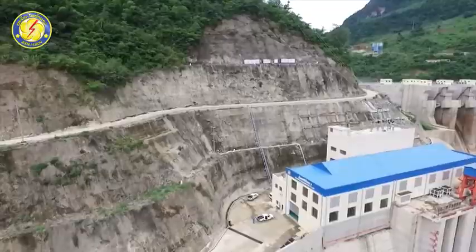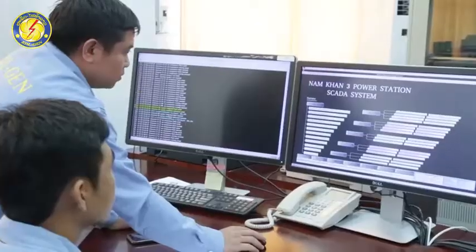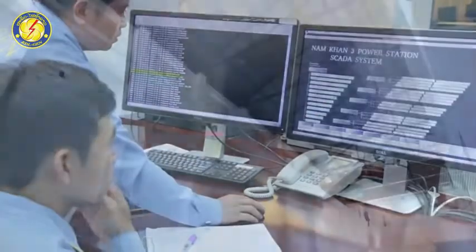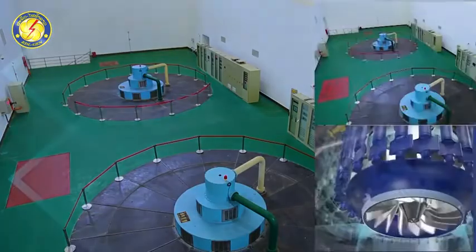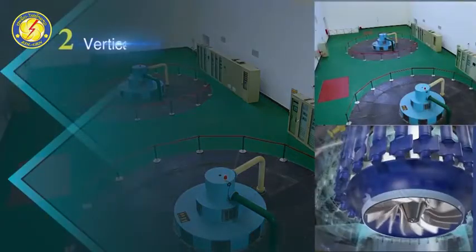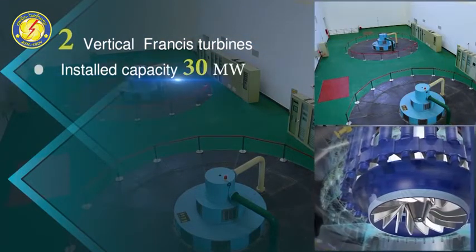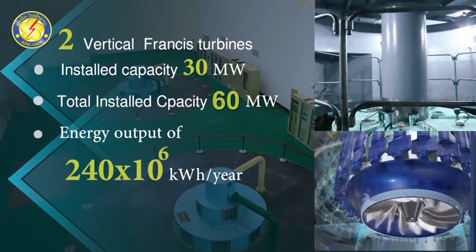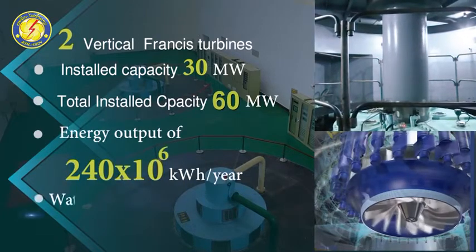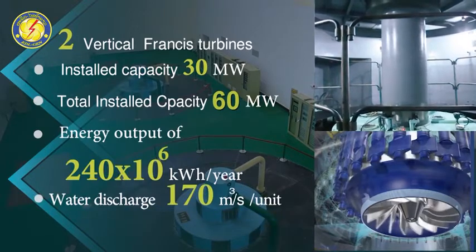Power house: A fully automatic SCADA computer control system is installed in the power house. The power house of Nam Khan 3 HPP consists of a control room with two vertical Francis turbines installed. Each turbine has an installed capacity of 30 MW, totaling 60 MW, with an energy output of 240 million kWh per year. The water discharge of both turbines is 170 m³ per second.